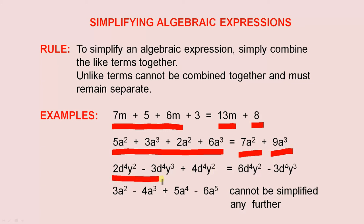In this expression here, you can add 2d to the 4th y squared and 4d to the 4th y squared. That gives you 6d to the 4th y squared. This term here is at the end and you cannot add it to this term here because the powers are different.